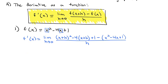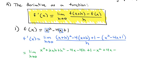Cleaning this up, we get the limit as h goes to 0 of: when we square x plus h, we get x squared plus 2xh plus h squared. Distributing the negative 4 through gives negative 4x minus 4h plus 1. Then distributing the negative through the subtracted function gives negative x squared, positive 4x, and negative 1, all over h.